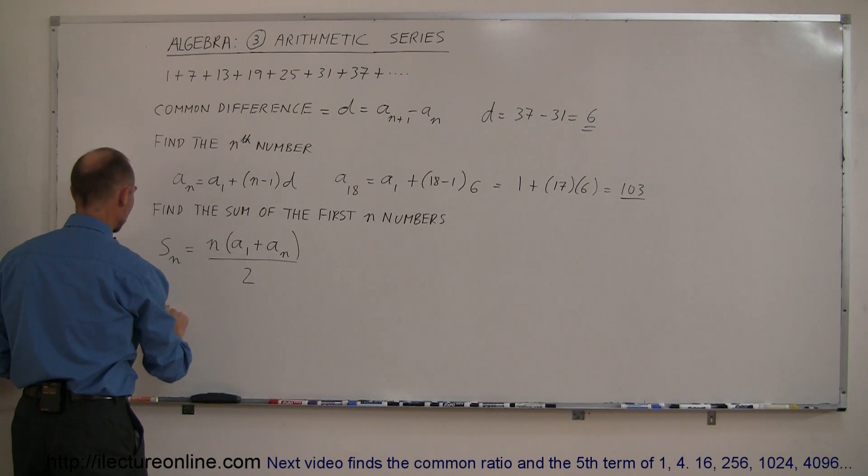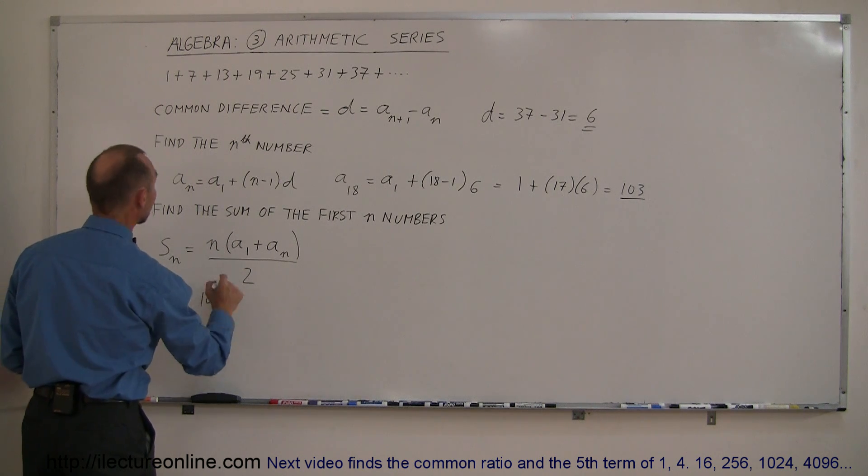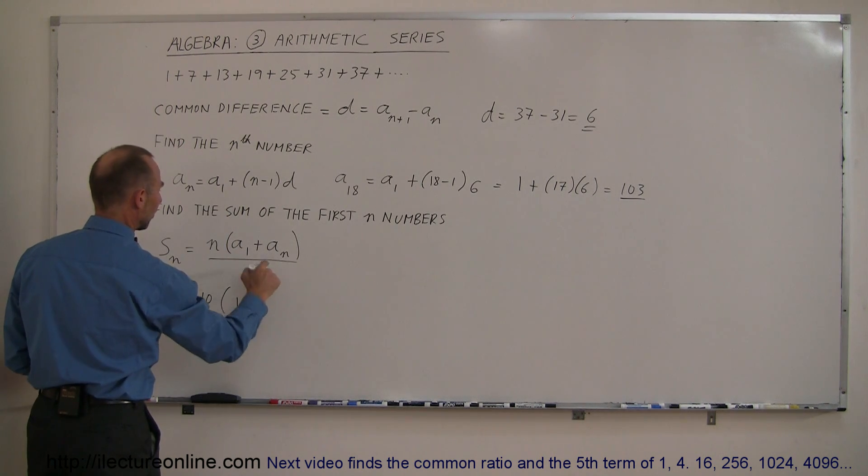But let's say that we want to find the sum of the first 10 in that sequence, so that's equal to 10, times the first one, which would be 1, plus the 10th one.